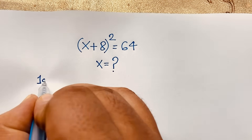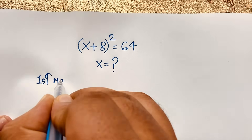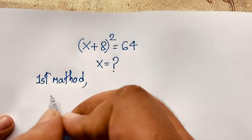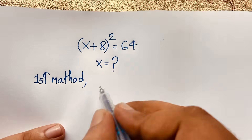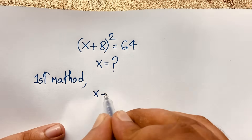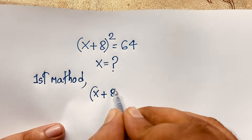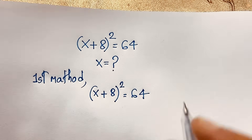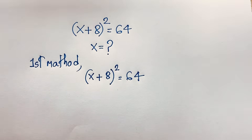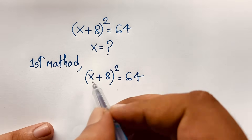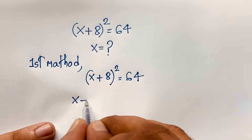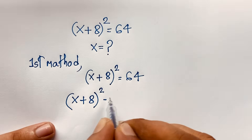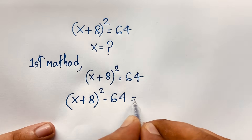Our first method. Our math problem: (x + 8)² = 64. Then I move on — below on this side, it will be (x + 8)² − 64 = 0.